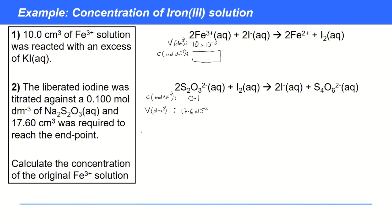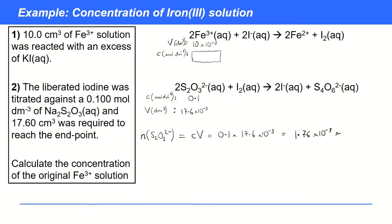With these unstructured calculations, rather than using tables I think it's better to write a series of lines of working. In each line, state the quantity — so I'm calculating number of moles, n — state which species, that's the thiosulfate ion, then write the formula: concentration × volume, and then the working. So 0.1 × 17.6 × 10⁻³ gives 1.76 × 10⁻³ mol.